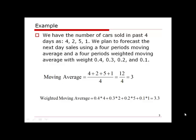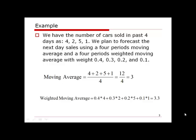Now, take a look at an example of the moving average and weighted moving average calculation. Assuming we have the number of cars sold in the past four days as 4, 2, 5, and 1, and we plan to forecast the next day's sales using a four-period moving average. To calculate the moving average, we simply calculate the average of these four numbers — we add them up and divide by 4, giving us a result of 3.